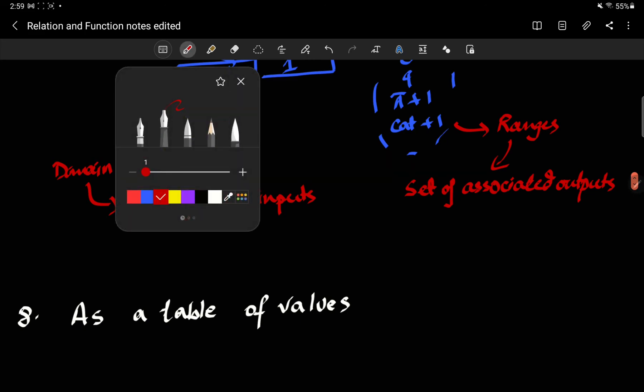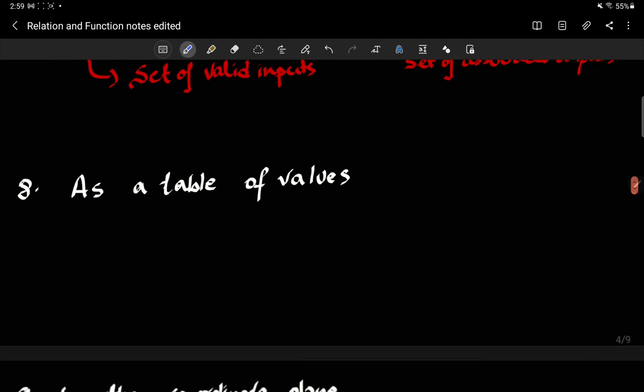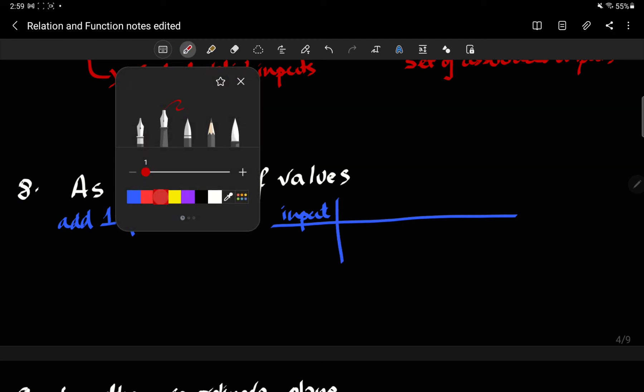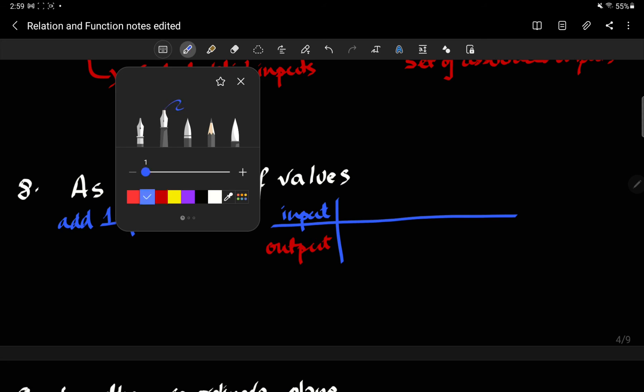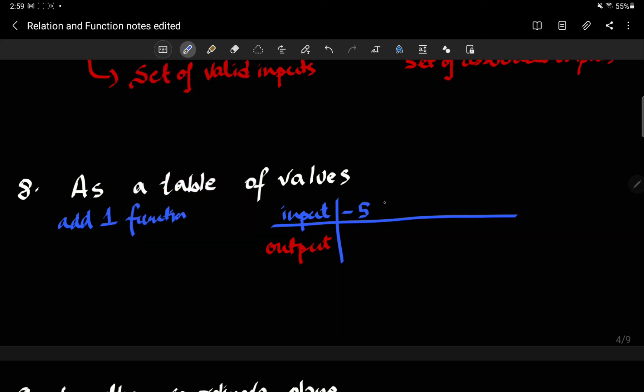So let's take for example the add one function. I can set up values for input and have values of the corresponding output. For example, let's say I pick my inputs to be negative five, negative three, zero, two, seven. Then I know that the output is just going to be negative four, negative two, one, three, and eight. Right? Why? Because the function is just adding one to it.